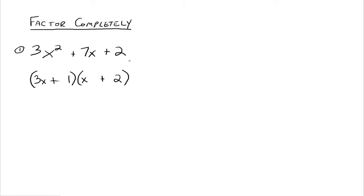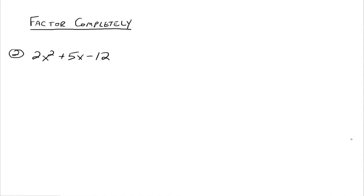The first one is usually the hardest to follow. The idea is to remember how to multiply binomials, and then you can start doing that in your head pretty fast to figure out if you have the right combination or not. Let's try another one.